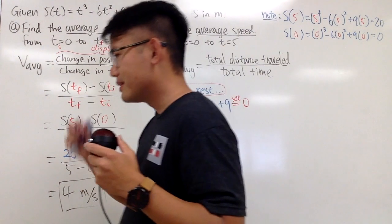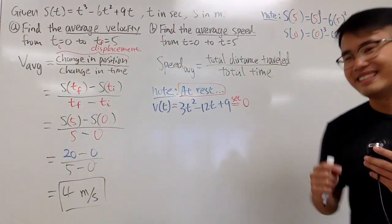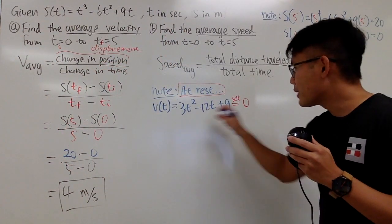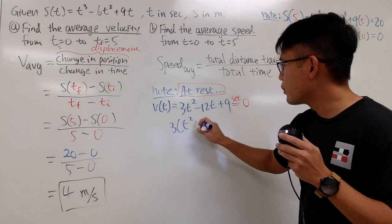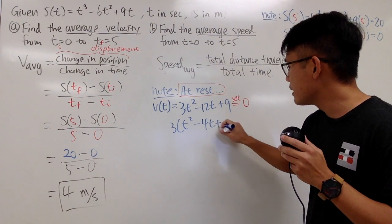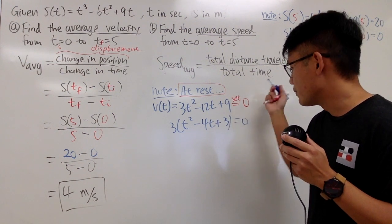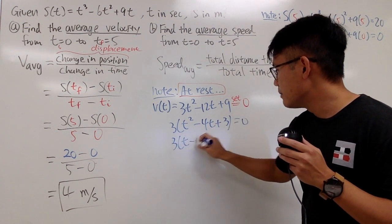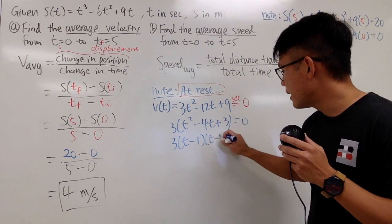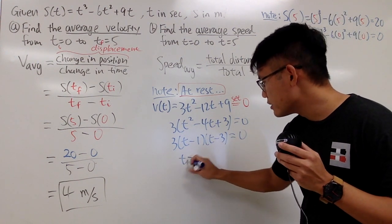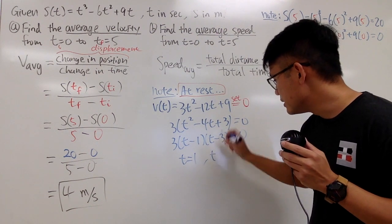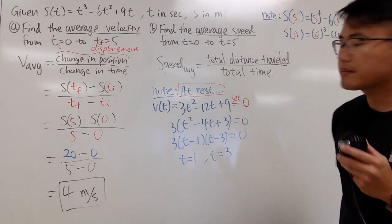If you set the velocity function to be 0, you will be able to find out at what time is the particle at rest. This is the algebra. We can factor out the 3 first, and you get 3(t² - 4t + 3). We want to look for 0, so this is (t - 1)(t - 3) equals 0. From here, you can see that t has to be 1, and from here, you can see that t has to be 3.